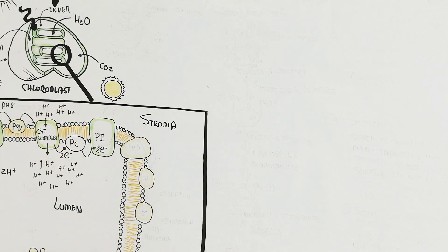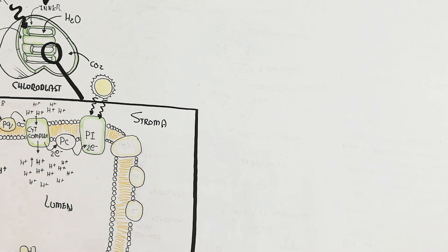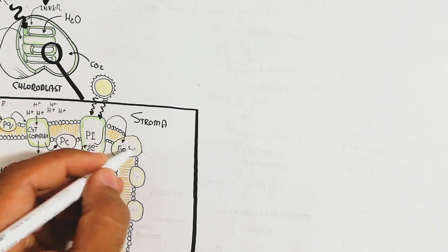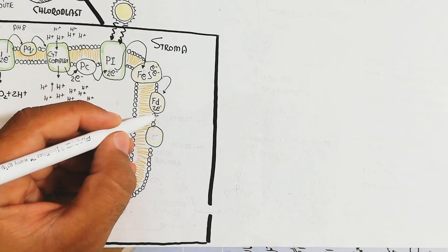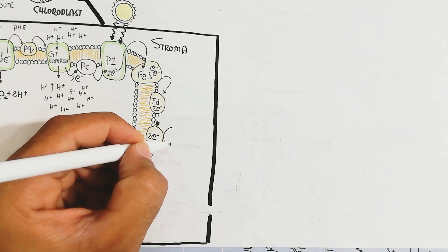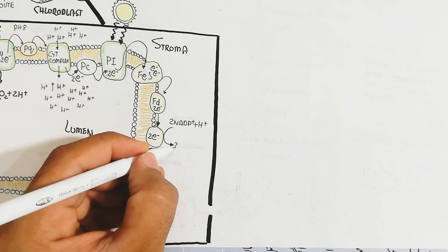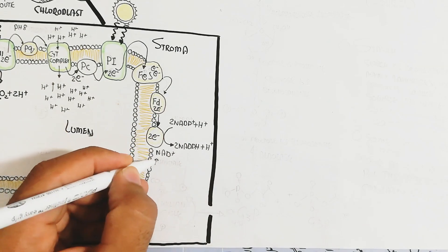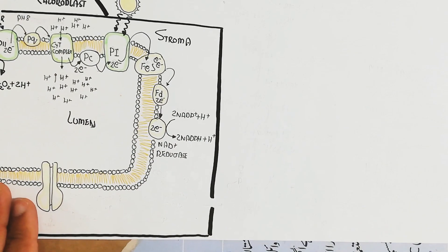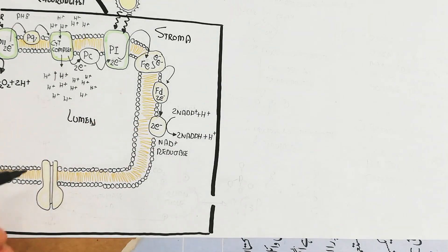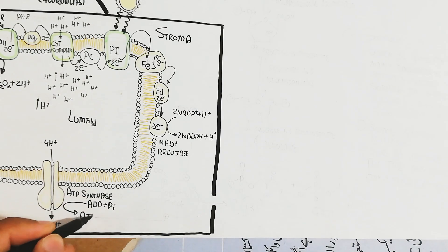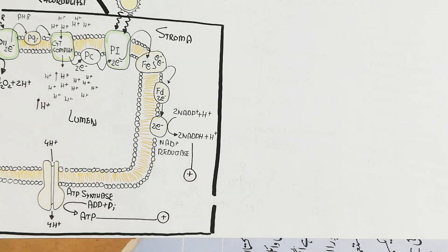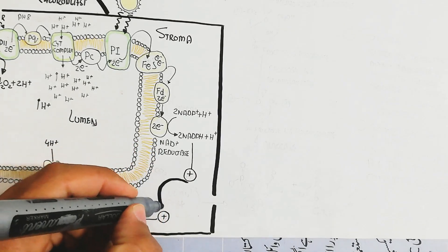Plastocyanin accepts these two electrons, and through further stimulation via Photosystem 1, excitation of electrons occurs again through light absorption by the chlorophyll molecule. The iron-sulfur protein accepts the electron containing higher energy, which then moves toward ferredoxin. Ferredoxin transmits the electron to NADP+ reductase, converting NADP+ into NADPH.